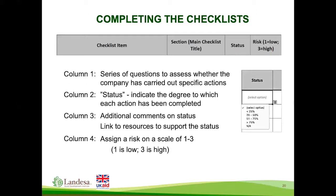The checklist provides questions to assess whether the company has carried out specific actions demonstrating compliance with key elements of responsible land-based investment — for example, whether the company has adopted a land rights policy or provided proper compensation to those whose land it obtained. Instead of answering yes or no, the user selects one of five options in the status column. The first rating — less than 25% complete — indicates the company has made minimal or no progress. For example, if a company has not conducted an environmental and social impact assessment, it would select this status.